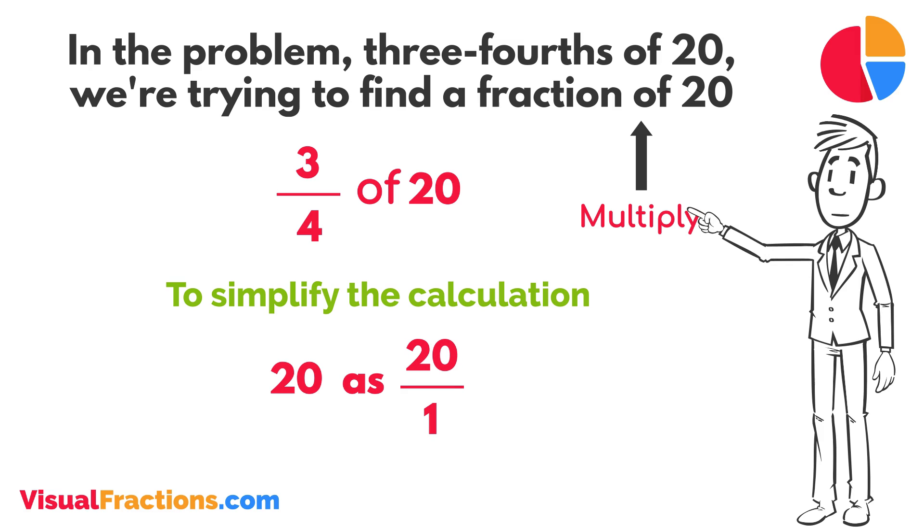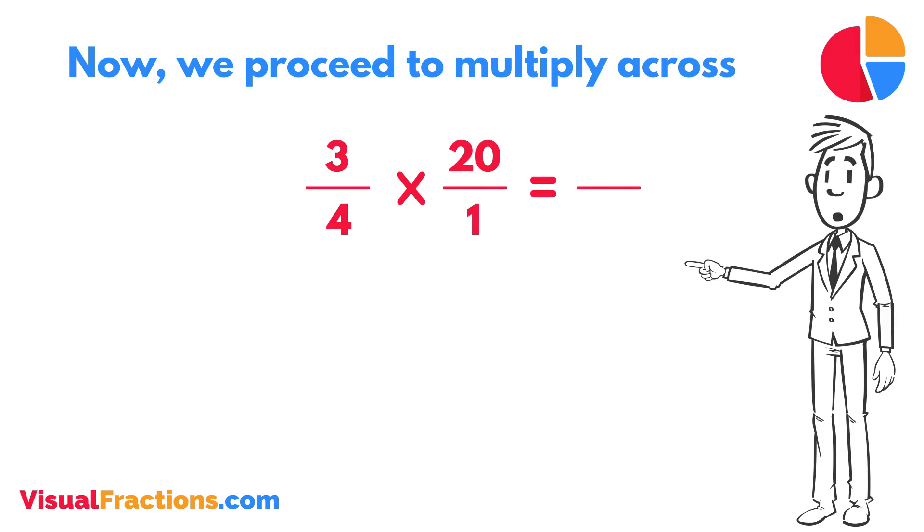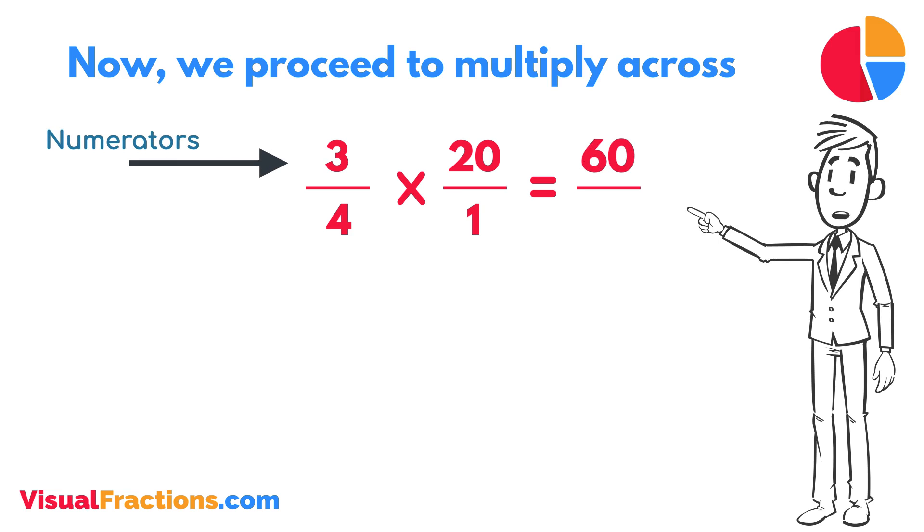This transformation makes it easier to work with our numbers as fractions. Now, we proceed to multiply across. First, multiply the numerators, 3 times 20 equals 60.